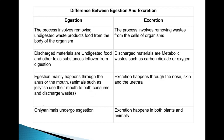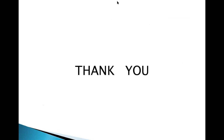In egestion, the discharged materials are undigested food and other toxic substances left over from digestion; it mainly happens through the anus or mouth, and only animals undergo egestion. In excretion, the discharged materials are metabolic waste products like carbon dioxide; excretion happens through the nose, skin, and urethra, and occurs in both plants and animals. Thank you all, see you in the next session.